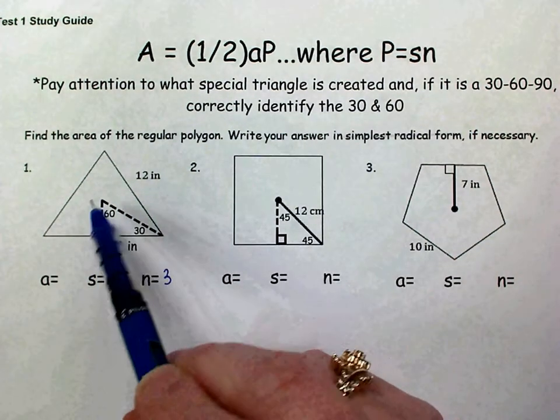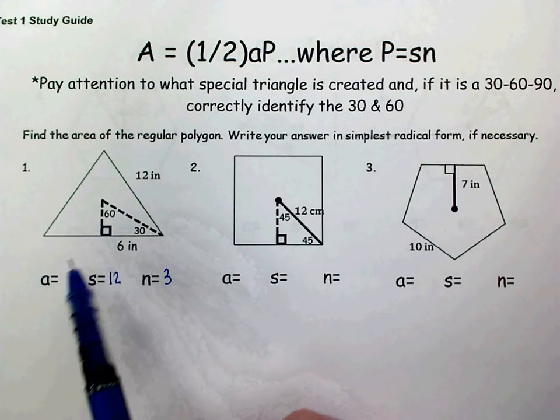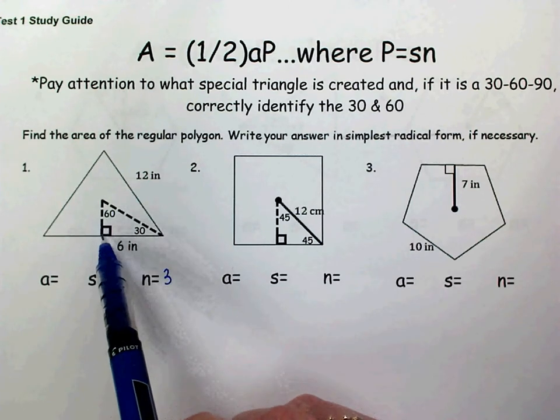Now this 30-60-90 triangle is not given in your drawing. That's something that you need to draw in there. So you're going to just eyeball where the center would be and sketch in an apothem.